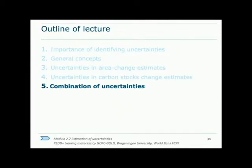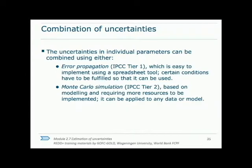Finally, the combination of uncertainties. There are two IPCC tiers defined for combining uncertainties: Tier 1, which is error propagation, and Tier 2, Monte Carlo simulation. Error propagation is easier to implement and involves a combination of uncertainties at all the various stages of the process to create a final estimate of the total uncertainty. Monte Carlo simulation is based on repeated sampling in a computer model and is more difficult to implement because it requires more complex computer programs.